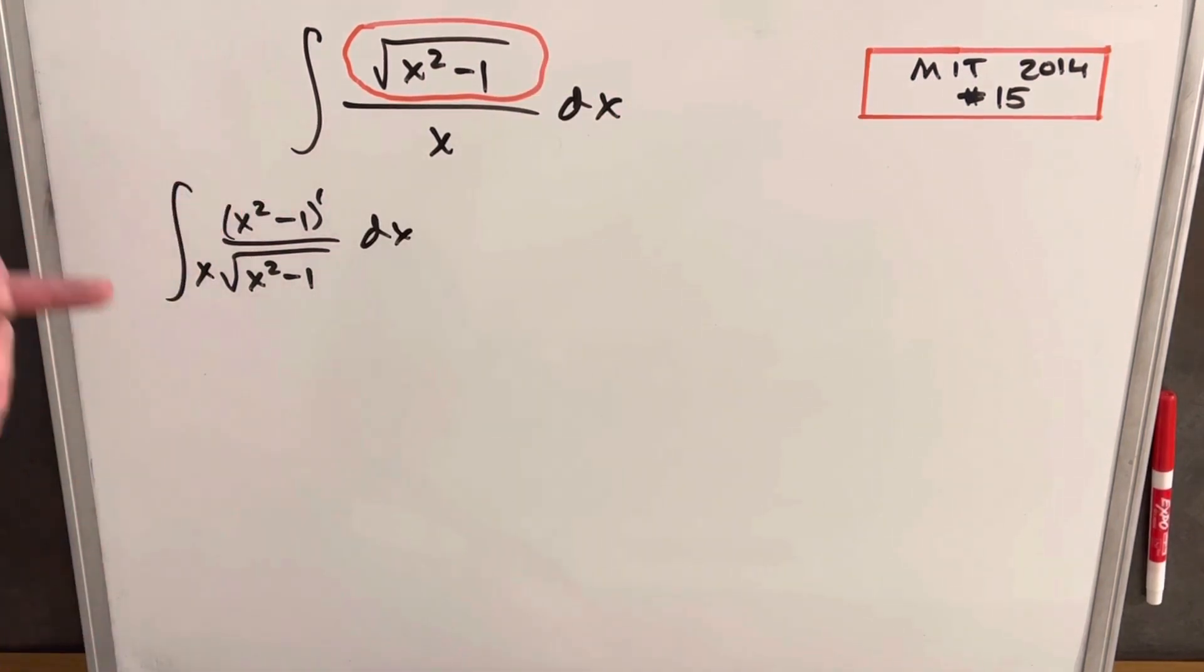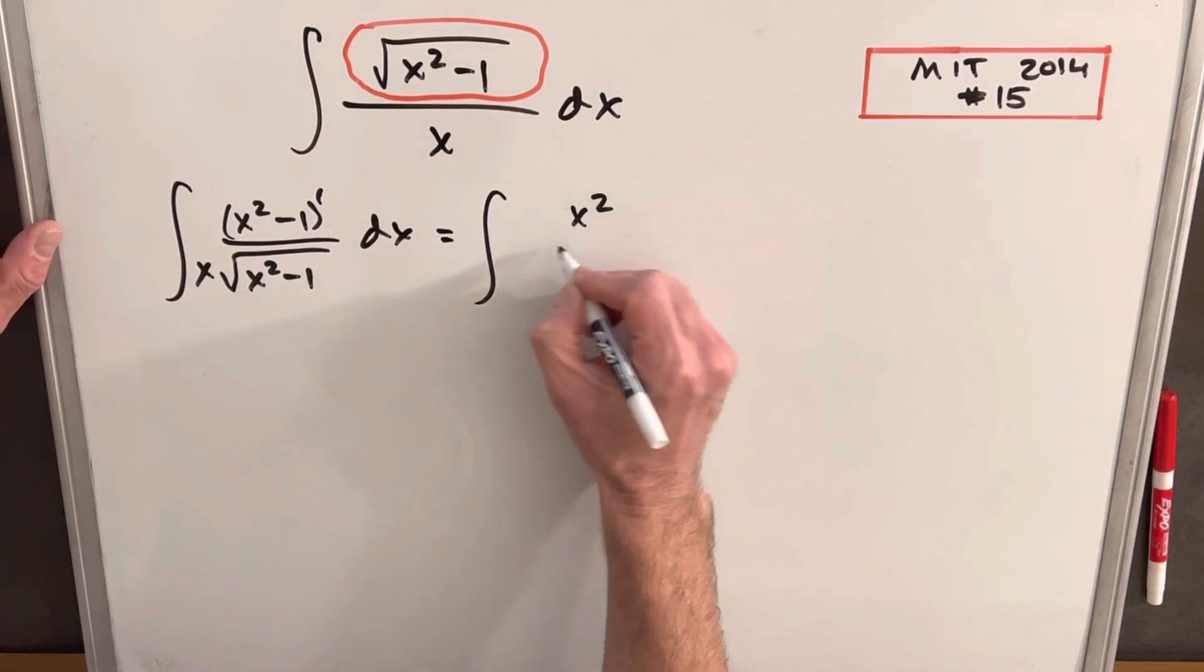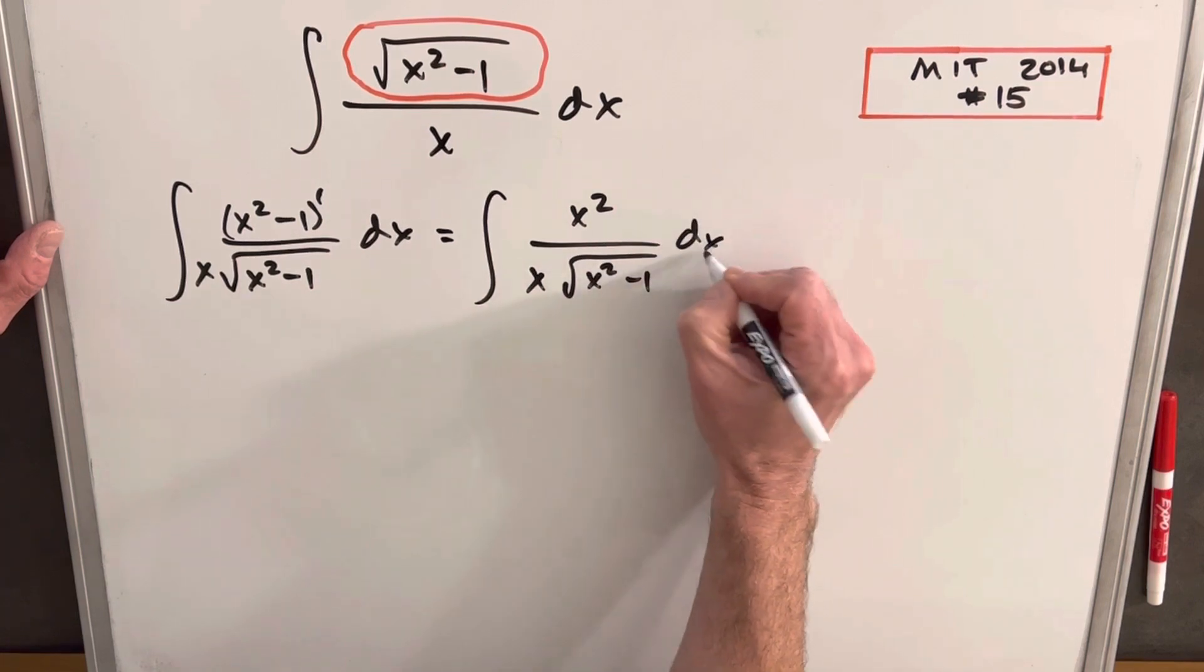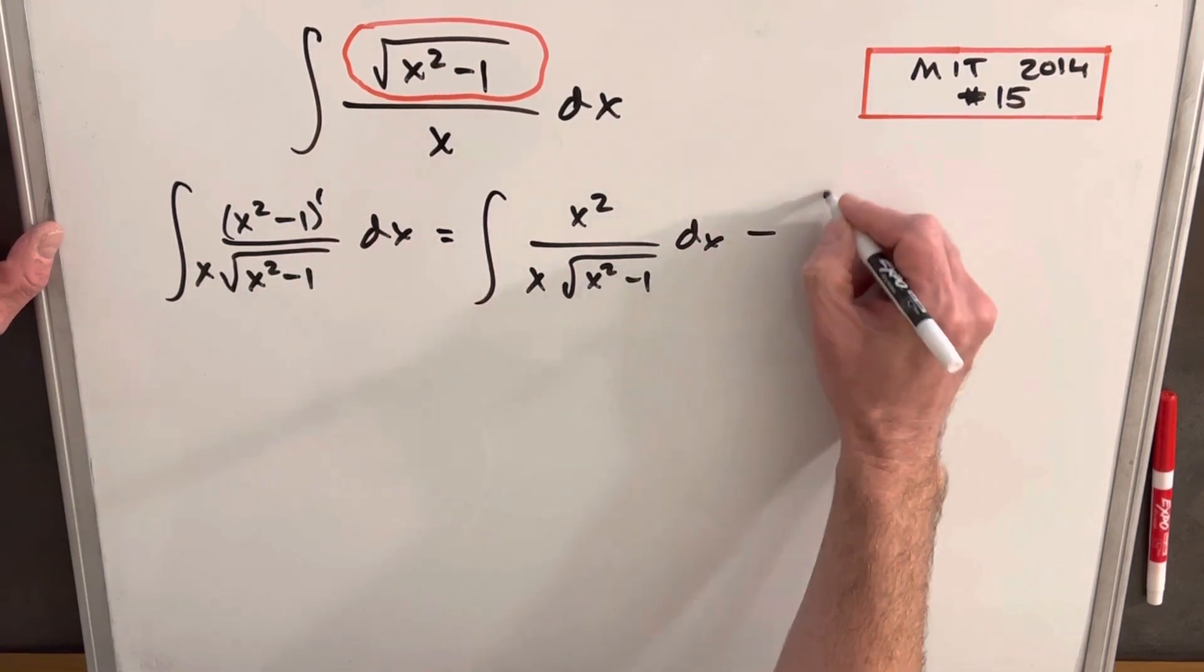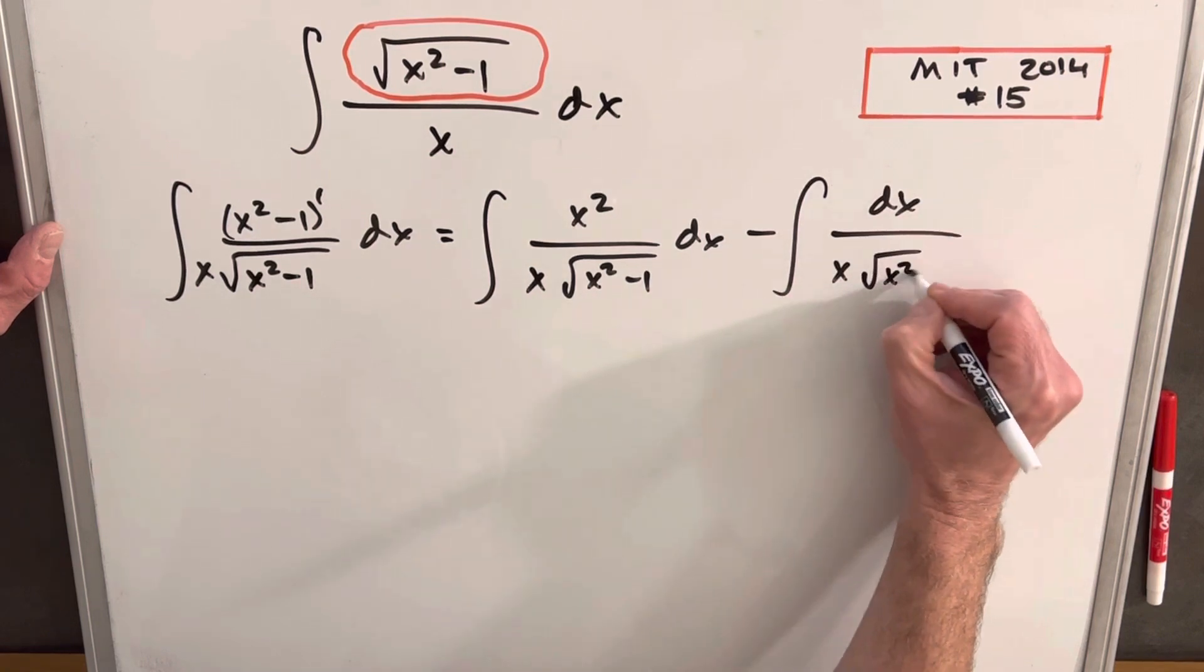And because we have a subtraction here, we can actually split this into two integrals. So we can write this as x squared over x times the square root of x squared minus 1 dx, and then we get a minus sign, dx over x times the square root of x squared minus 1.